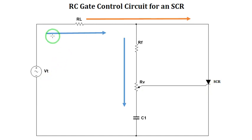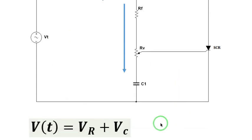Since we are talking of the gate control circuit of the SCR, we will be focusing on the discussion around this loop here. The voltage equation around this loop is V(t) equals V sum R plus V sum C.